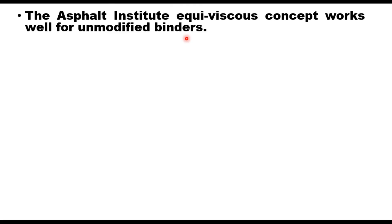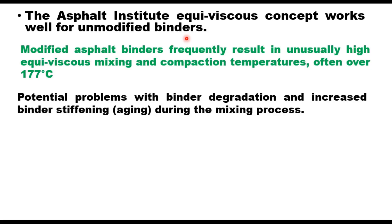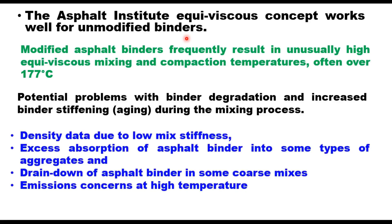Increasing use of highly modified binders in road construction has necessitated consideration of a different method to determine compaction and mixing temperature, because modified asphalt binders frequently result in unusually high equiviscous mixing and compaction temperatures — generally over 177°C. At these high temperatures, there are potential problems with binder degradation and increased binder stiffness during the mixing process. Additionally, there may be problems achieving density due to low mix stiffness, excess absorption of asphalt binder into some aggregate types, drain-down of asphalt binder in some coarse mixes, and emissions concerns at high temperatures.